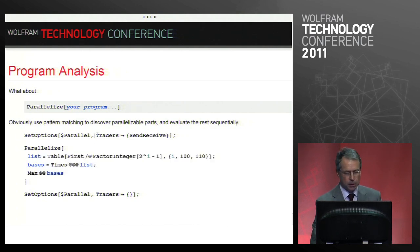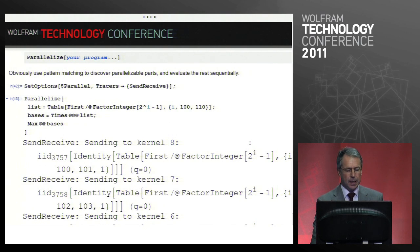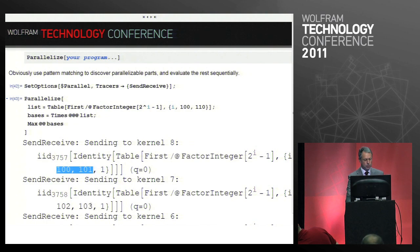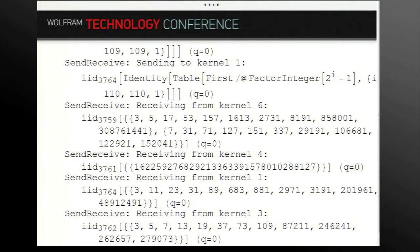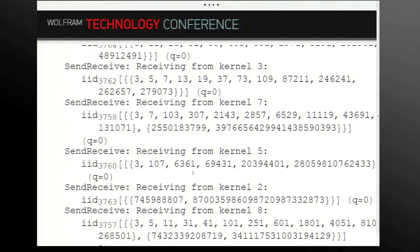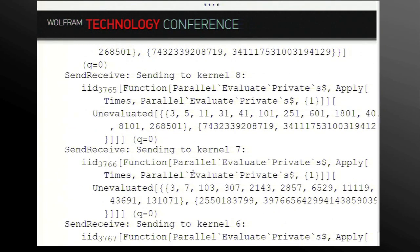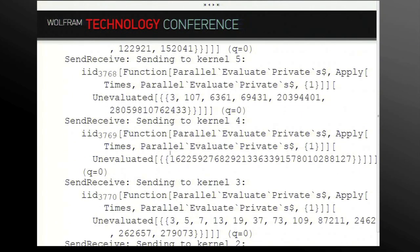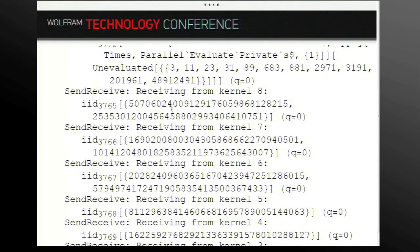This command will generate a lot of output, so let me just scroll up and show you some of the things that it does. The first thing it does is parallelize the table. Obviously the assignment here is still on the master kernel, so it parallelizes this part. It sends these sub-tables here from 100 to 101, from 102 to 103, and after it does that it will get back the results. So here come the results, receiving results from these kernels.